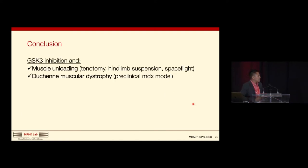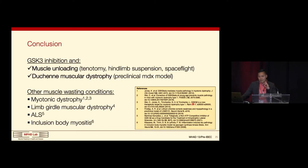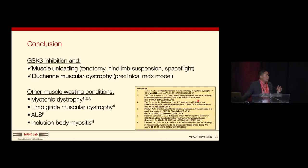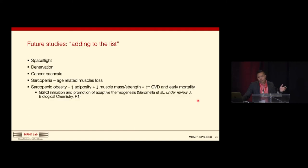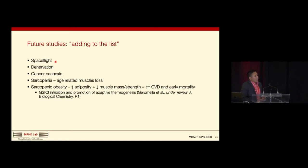In conclusion, GSK-3 inhibition can benefit conditions of soleus muscle unloading and Duchenne muscular dystrophy. There are other muscle wasting conditions that also seem to benefit from GSK-3 inhibition, including myotonic dystrophy type 1, limb girdle muscular dystrophy, ALS, and inclusion body myositis. There's a growing body of evidence that GSK-3 inhibition can combat several muscle wasting conditions, and we hope to add to this list with future studies in spaceflight, denervation, cancer cachexia, sarcopenia, and sarcopenic obesity — which is characterized by increased adiposity with decreased muscle mass and strength, and increased risk of cardiovascular disease and early mortality.